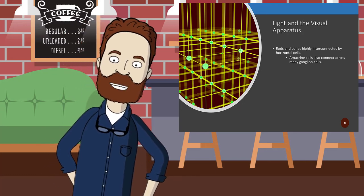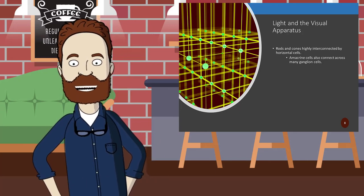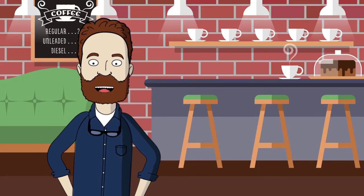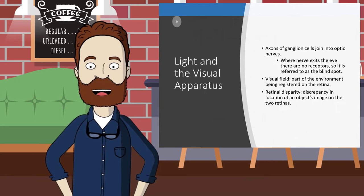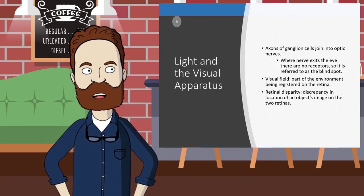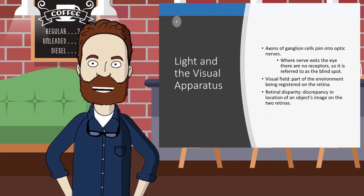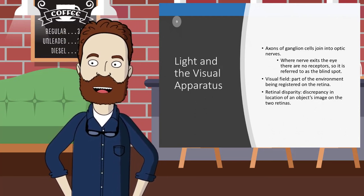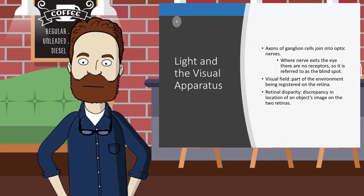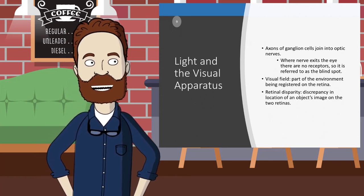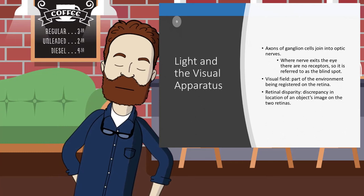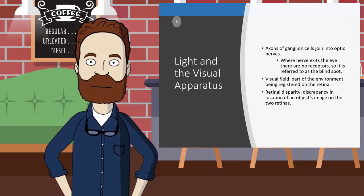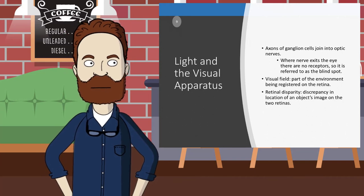Interconnections suggest that a great deal of visual processing is done by the retina itself, which is why many vision scientists consider the retina to be part of the brain. Axons of ganglion cells join into the optic nerve. Where the nerve exits the eye, there are no receptors. It's often referred to as a blind spot. The blind spots of the two eyes fall at different points in the visual scene, so the visual world remains intact. The brain is also good at filling in the missing information, even when a small part of the visual system is damaged.